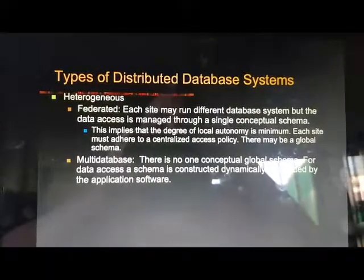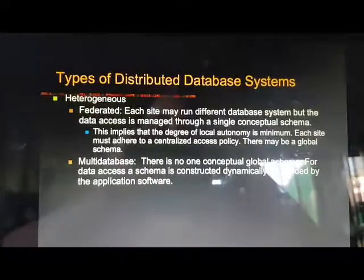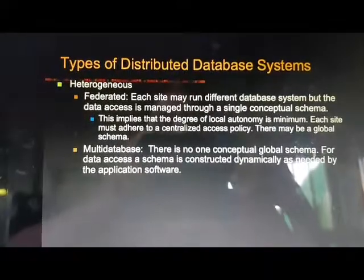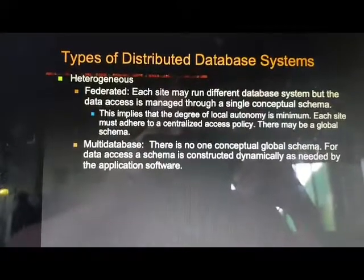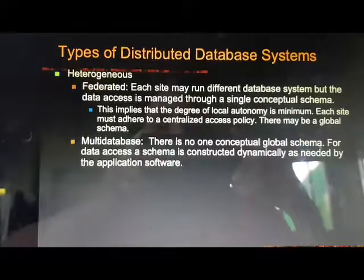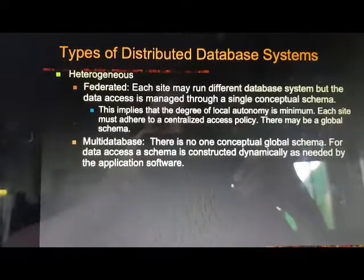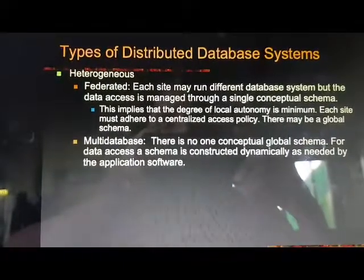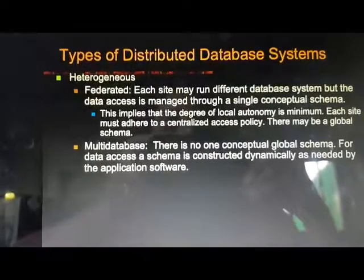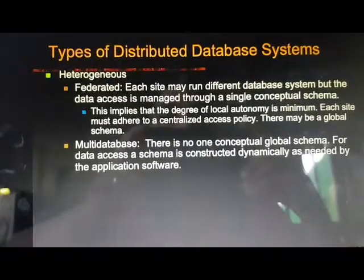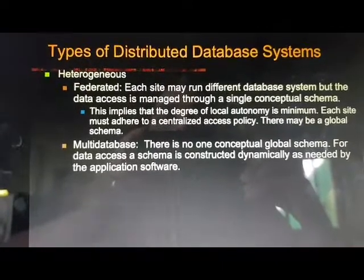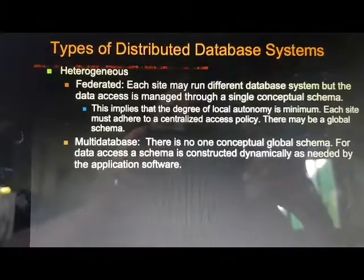Homogeneous database system means data that is stored in the distributed databases is of same type. It may be either RDBMS, it may be multimedia databases, it may be temporal or spatial, but it will be consisting of only a single type.